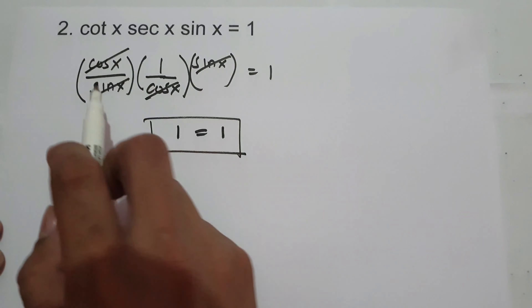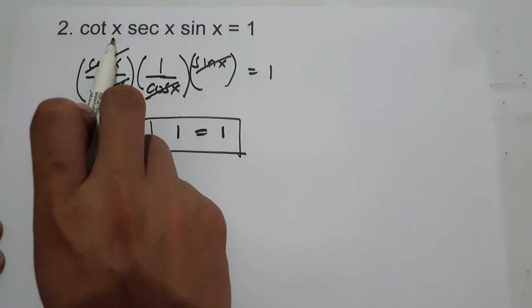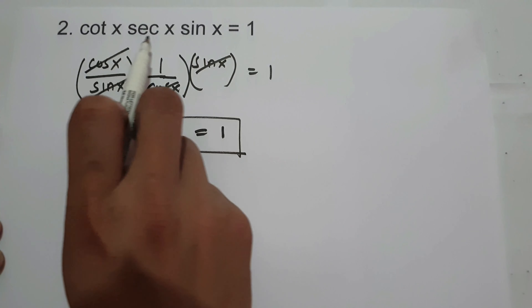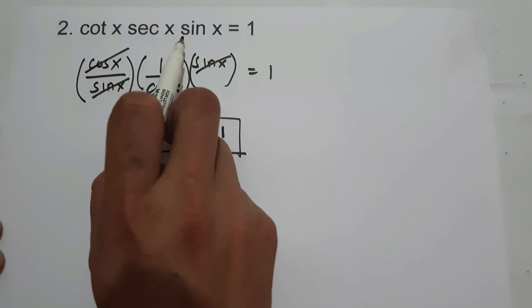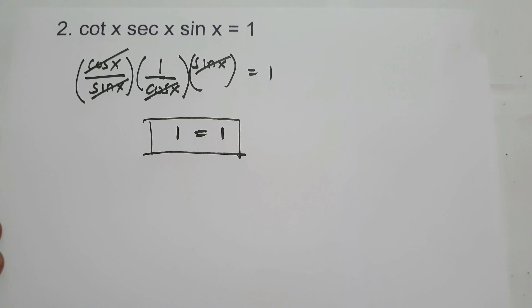Therefore, 1 is equal to 1. So therefore, we prove that cotangent x times secant x multiplied by sin x is equal to 1.